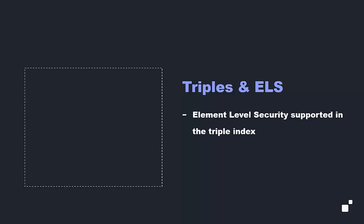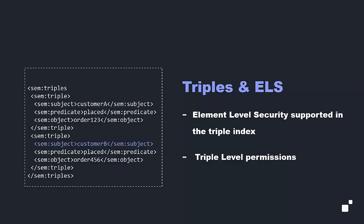With MarkLogic 10 and later, however, element-level security has been extended to triples and the triple index. Triples can be protected individually by defining a protected path on them. For example, we could set a protected path to control the access to triples with a subject of customer B.